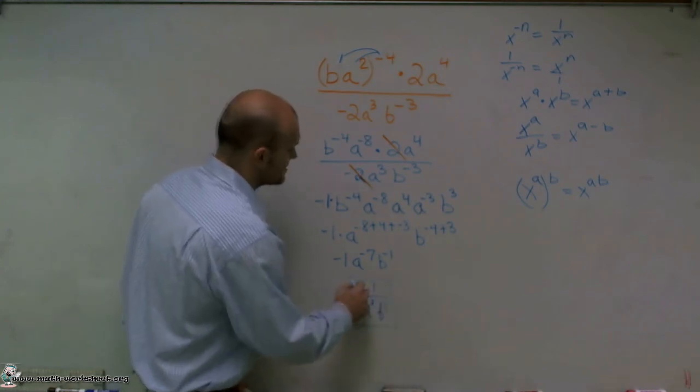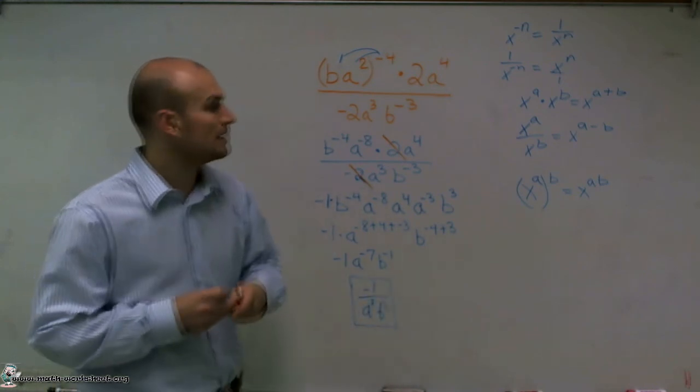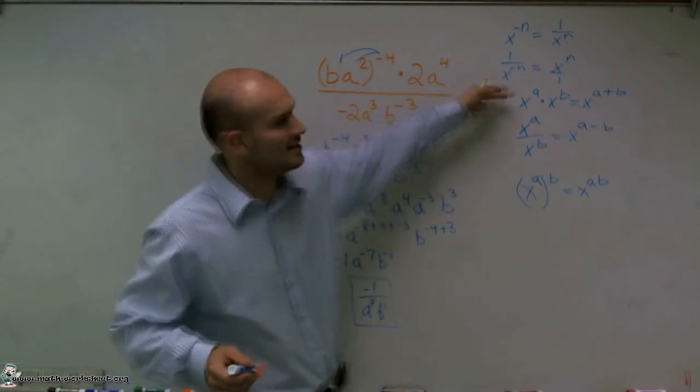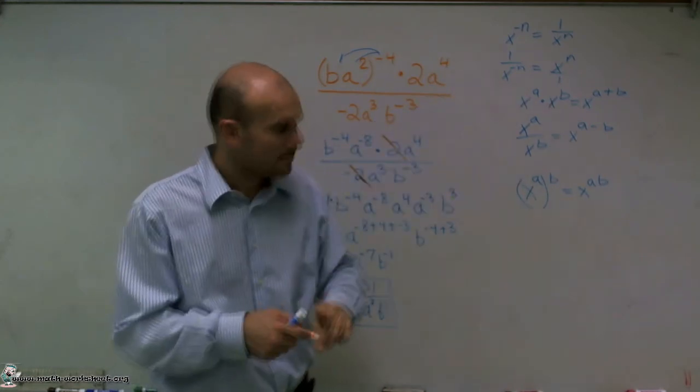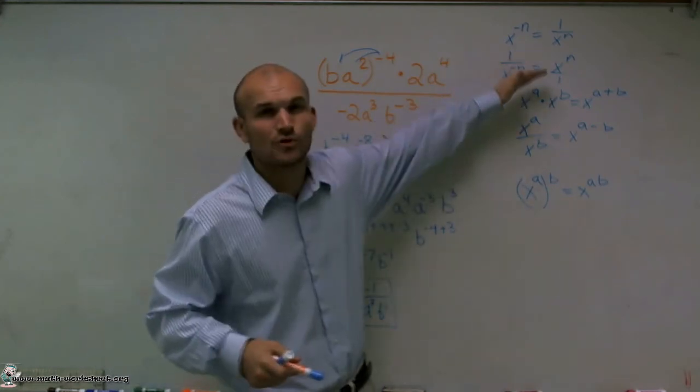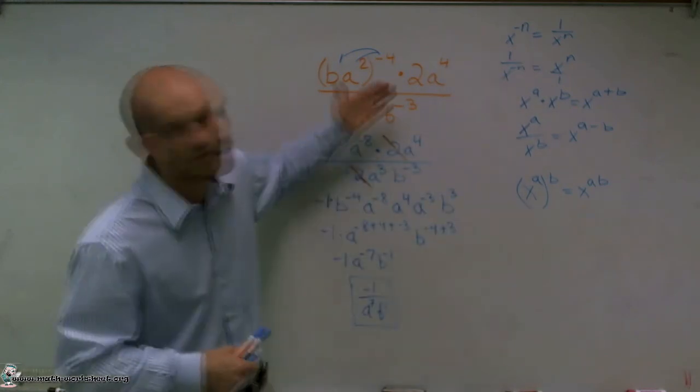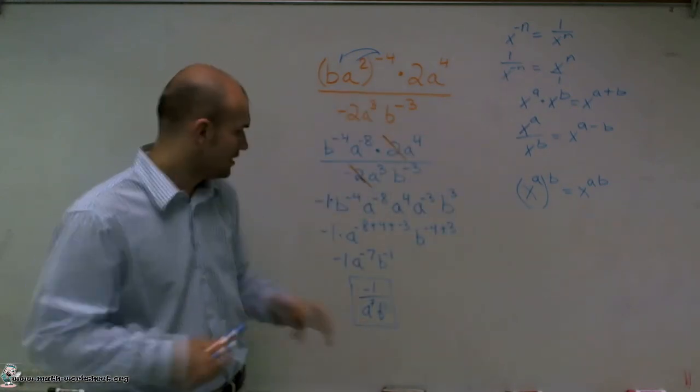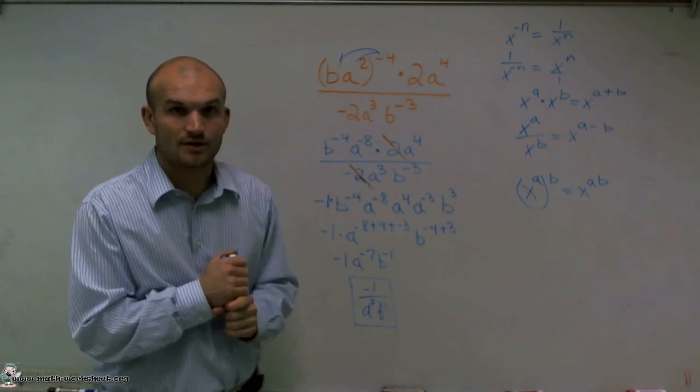So that is how you simplify. It's much easier to make sure you put them all in the same line, and then use adding and multiplication. But the most important thing is you understand these rules and where to apply them. There's multiple ways to get to my exact same answer, which is negative one over A to the seventh B. Thank you.